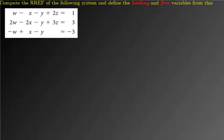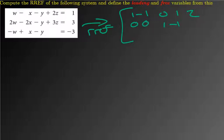So REF would give you 1, negative 1, 0, 1, 2, 0, 0, 1, negative 1, 1, and then a row of 0. And RREF will always be unique.